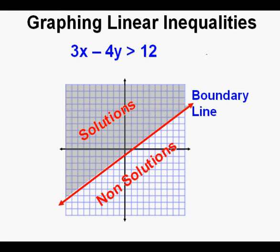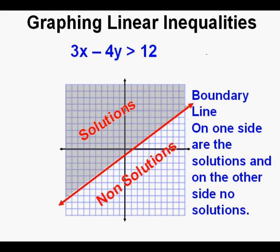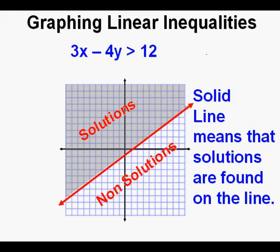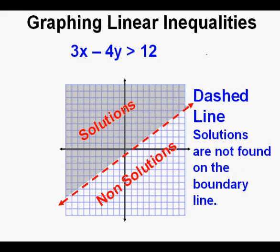In an equation, we are solving for a line, but in an inequality, we are solving for a boundary line. Because the line we graph is a boundary, on one side of the line are solutions, and on the other side there are no solutions. The shaded area above the red line is the set of solutions, and the unshaded area below the line contains no solutions. Since the boundary line is solid, that line is also part of the solution set. We need to draw either a solid line or a dashed line — a dashed line is used when the boundary line does not include the solutions.